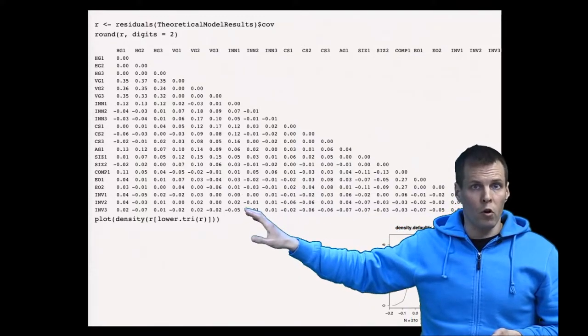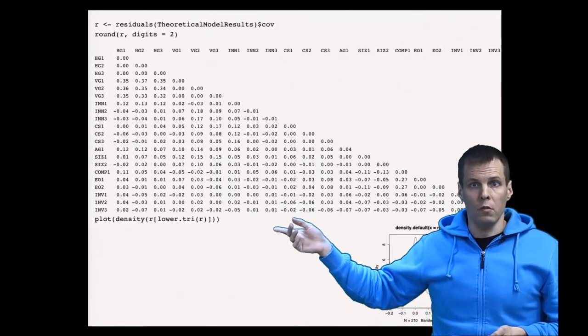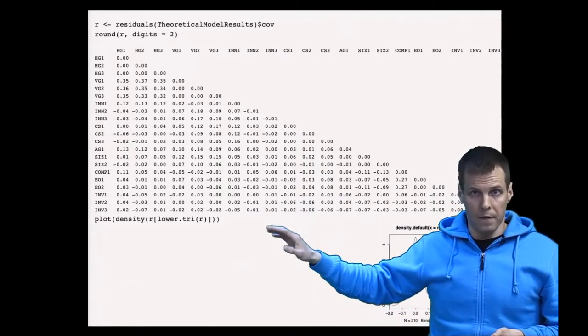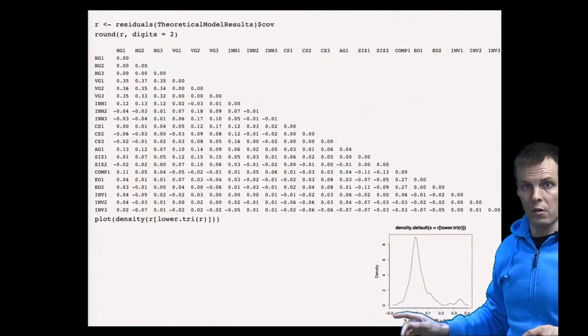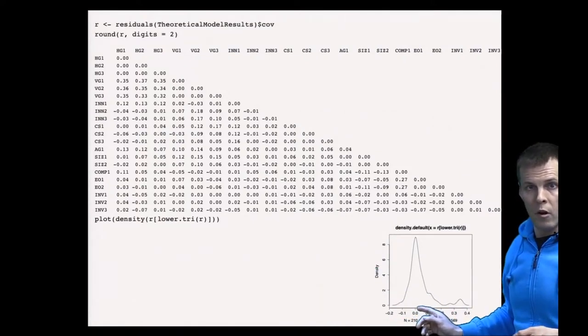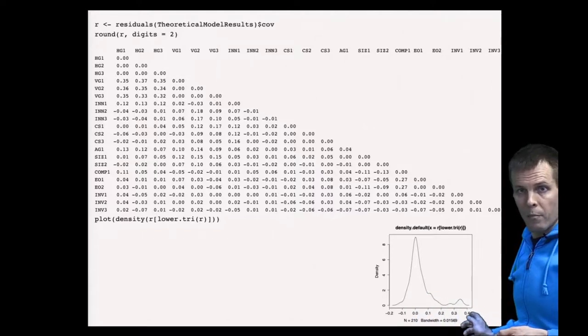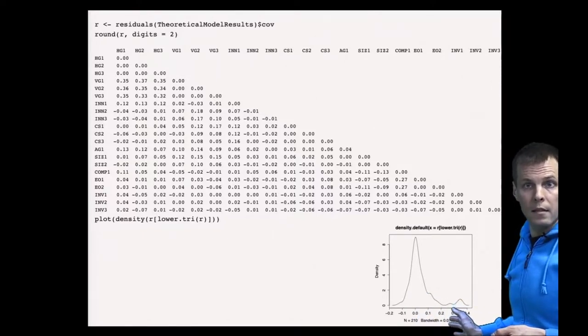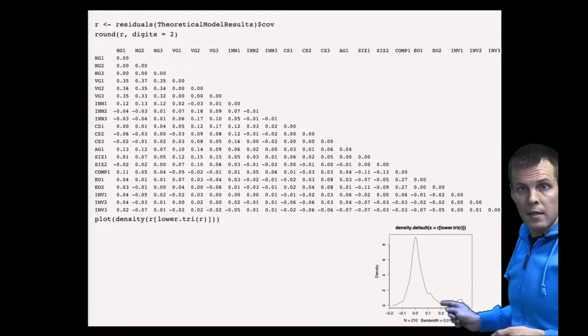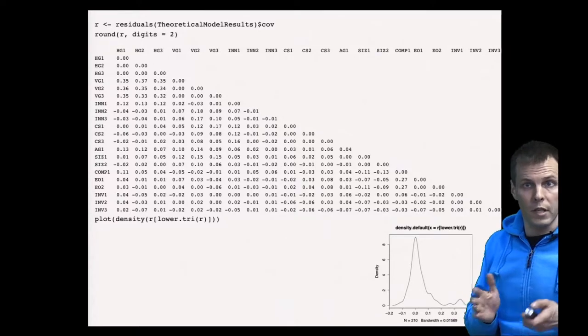First is the overall distribution of these residuals. It turns out that if the model is correctly specified, these residual correlations are normally distributed with the mean at zero. We can see here that we have this bump here on the right-hand side on the tail, which indicates misspecification.